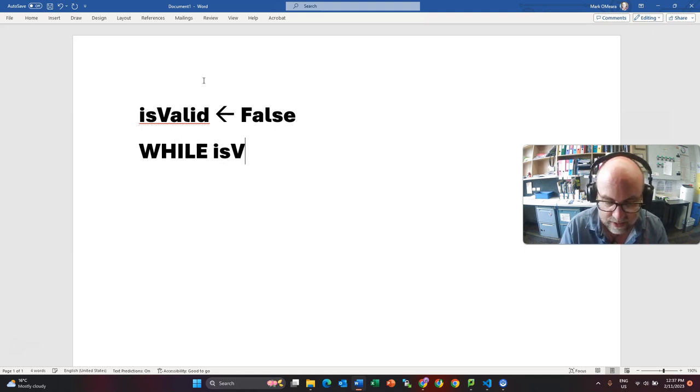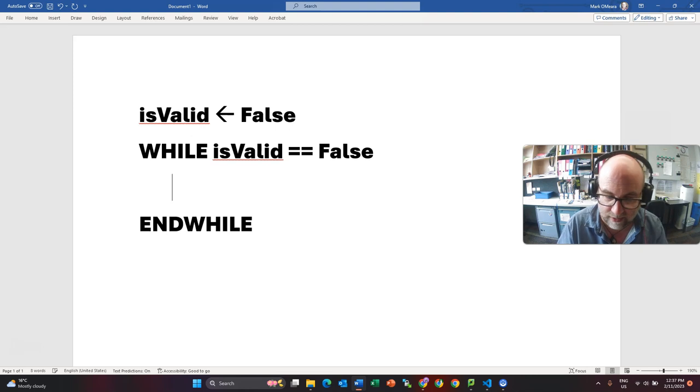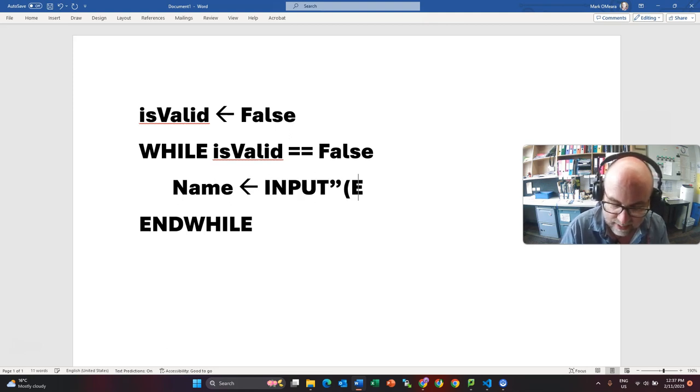So while is valid equals equals false. I could equally put is not true, but I am going to put is false. Well, and then I set my end while. Well, what am I going to do in here? Well, I am going to get their name from them. And I am going to get their name from an input. And I am just going to say, enter your name.